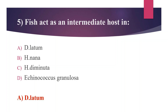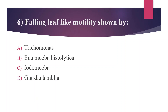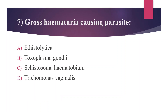Sixth question: Falling leaf-like motility is shown by — Option A: Trichomonas, Option B: Entamoeba histolytica, Option C: Iodamoeba, Option D: Giardia lamblia. The answer is Option D, Giardia lamblia. Trichomonas vaginalis has 5 flagella and its motility is quivering motility. Entamoeba histolytica has pseudopodia and shows progressive directional motility. Iodamoeba is also actively motile, with short blunt pseudopodia and slow movement.